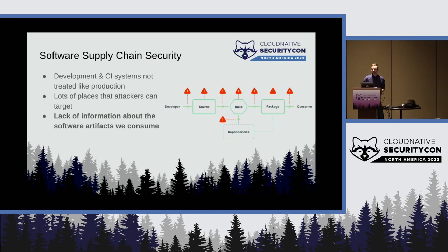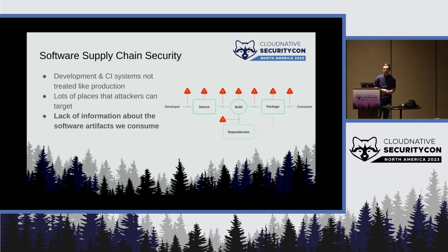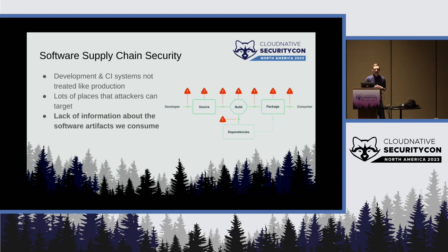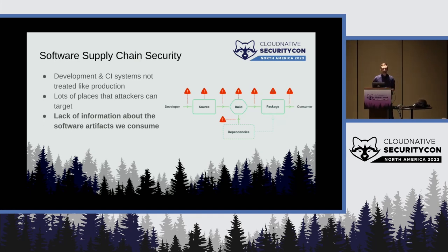Software supply chain security has been a hot topic in the security space for the last couple of years. This is basically because attackers have shifted their focus towards the software supply chain. Part of the root causes is that development and CI systems are essentially not treated like production — not given the same level of security hardening. There's been a culture of essentially YOLO for dev systems, where production is where we actually harden things. But that's not the case, because there are channels to get malicious software into production through CI and development systems.